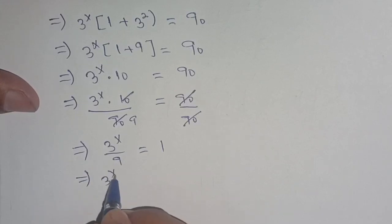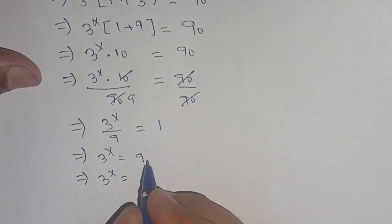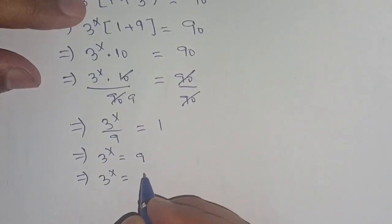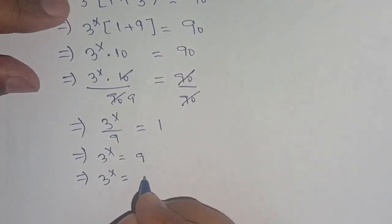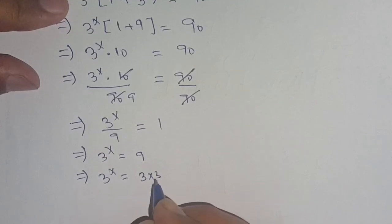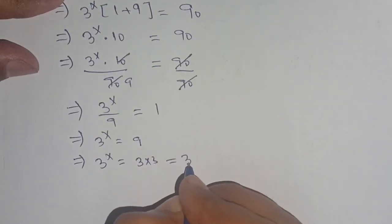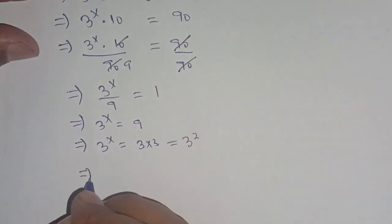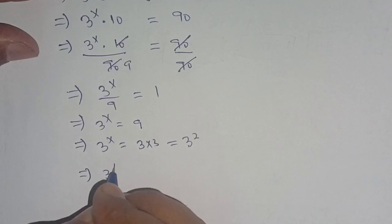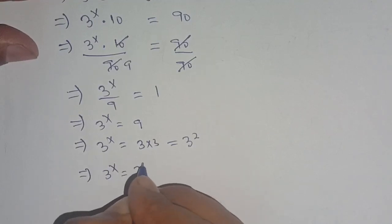It becomes 3 raised to power x is equal to 9, which implies 3 raised to power x is equal to 9. That is equal to 3 times 3, which is 9, and it is equal to 3 raised to power 2.